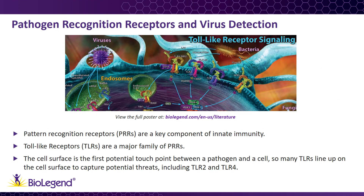To sense the presence of viral PAMPs, host cells use receptors called pathogen recognition receptors, or PRRs. PRRs are designed to recognize conserved PAMPs to trigger an innate immune response. These receptors can be expressed on the plasma membrane of cells, or can be found on the inside of cells to detect viruses as they attempt to replicate. Toll-like receptors, or TLRs, are a major family of PRRs. TLRs are transmembrane proteins found on the cell surface and in endosomes.